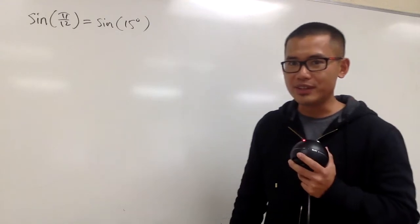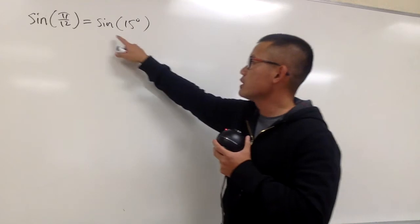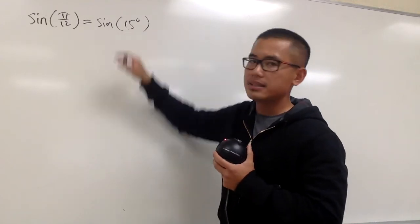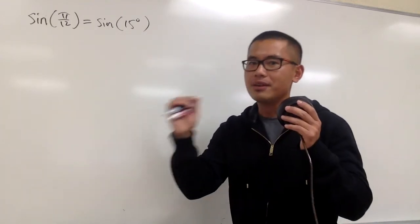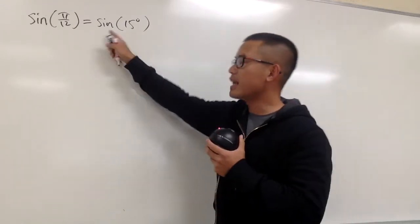In one of my previous videos, I showed you how to use the angle difference formula for it. We wrote sine of 15 degrees as sine of 45 degrees minus 30 degrees, and then broke it apart from there.